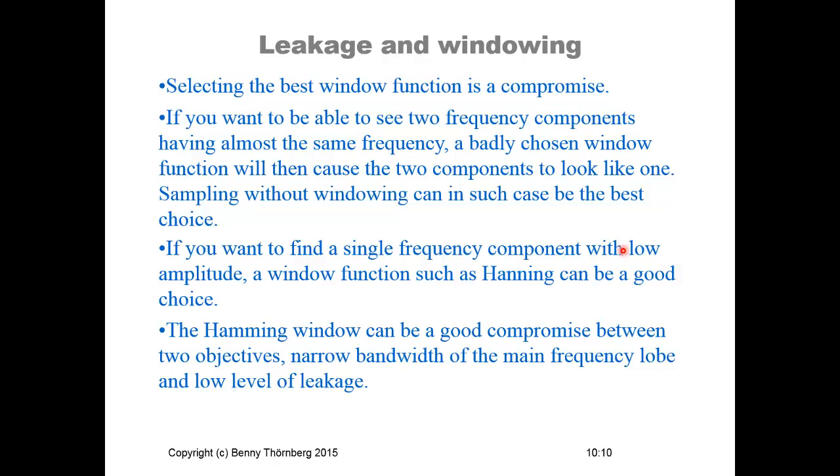So one can conclude from this that selecting the best window function is always a compromise. And if you want to be able to see two frequency components having almost the same frequency, a badly chosen window function will then cause the two components to look like one. Sampling without windowing can also in some cases be the best choice. If you want to find a single frequency component with low amplitude, a window function such as Hamming can be a good choice. The Hamming window can be a good compromise between the two objectives, narrow bandwidth of the main frequency lobe and also low level response of the spurious responses from the side lobes.